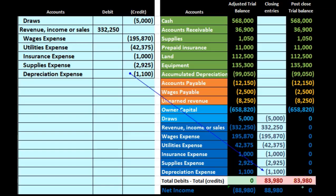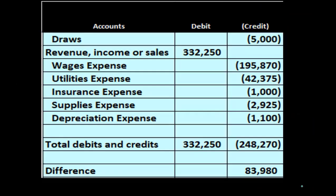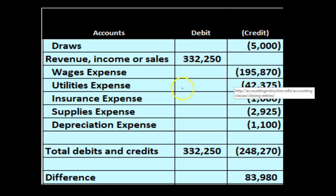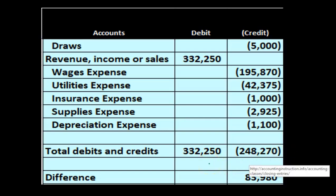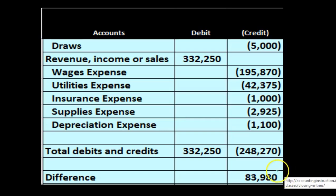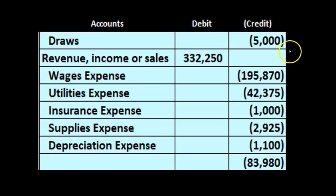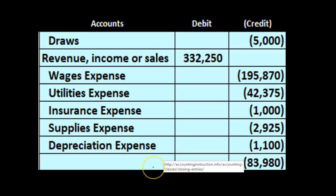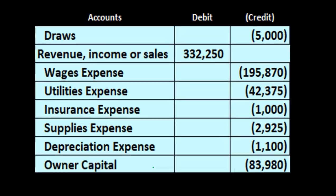Now we're still out of balance — our debits do not equal the credits. If we sum up the debits, they add up to $332,250. If we add up the credits: $5,000 plus $195,870 plus $42,375 plus $1,000 plus $2,925 plus $1,100 equals $248,270. So $332,250 minus $248,270 gives us a difference of $83,980 — that's what we need to make the debits equal the credits. If we put that on the credit side, we'll be in balance. We're going to close all of this out to the capital account.